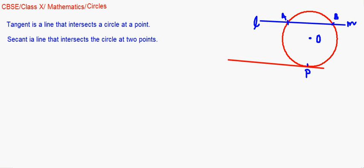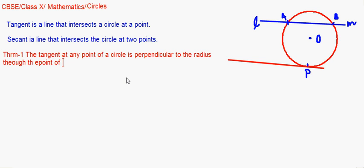These are the two basic concepts. Based on them, let us take up the first theorem. A tangent at any point of a circle is perpendicular to the radius through the point of contact.